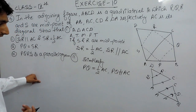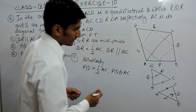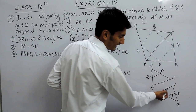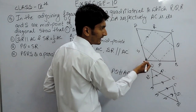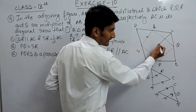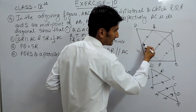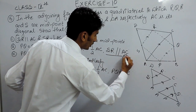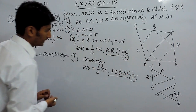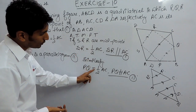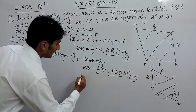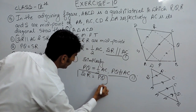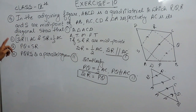Since SR is equal to half of AC and PQ is also equal to half of AC, both right-hand sides are equal. Therefore, the left-hand sides must also be equal, meaning SR equals PQ. This is how we prove the second part.